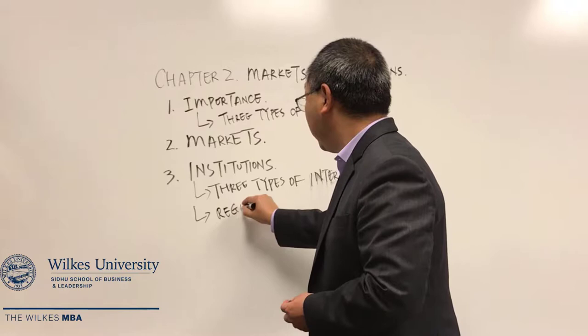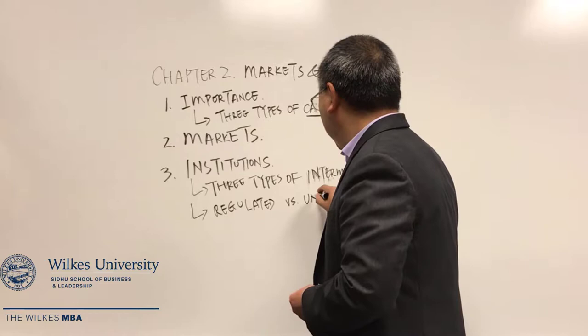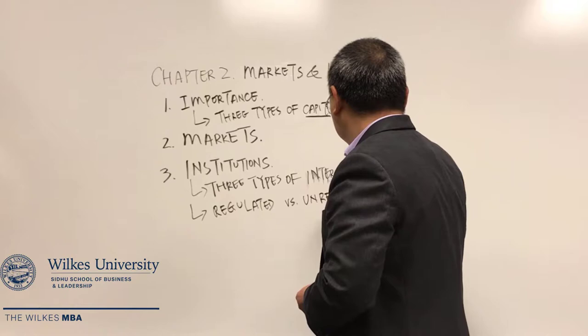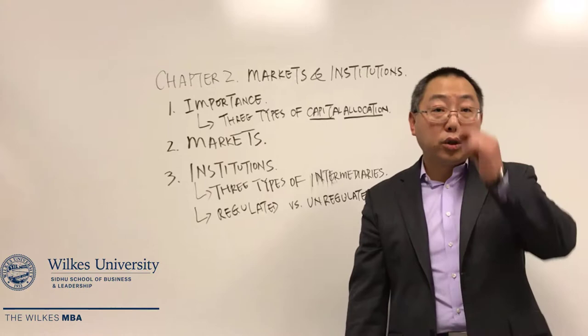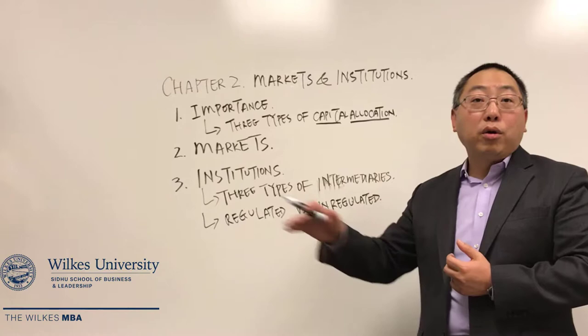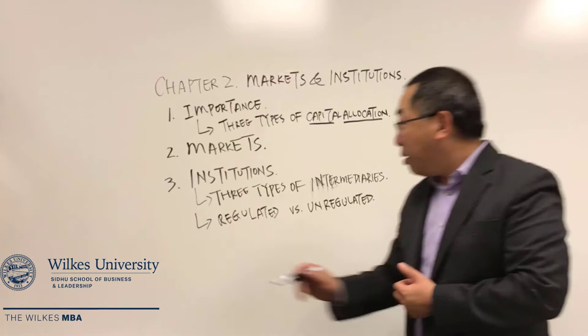Also for financial institutions, keep in mind the comparison between the regulated institutions versus the unregulated institutions. It's easier to remember the unregulated institutions because there are two major players in that group: private equity firms and hedge funds. All the rest of the institutions are under the regulated group.